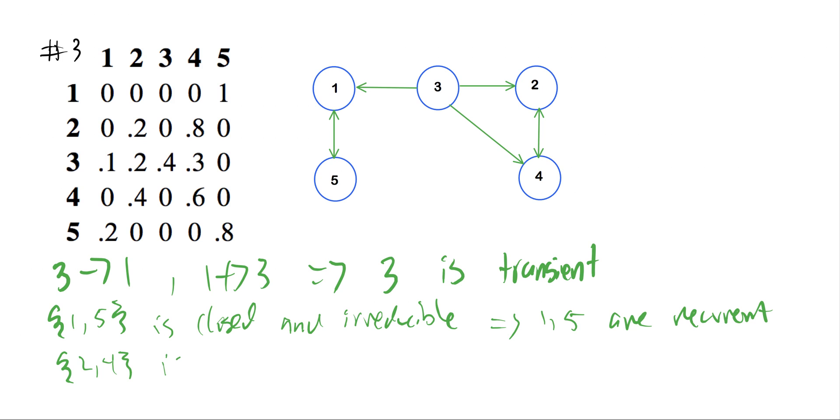So this is closed. And again, the definition of irreducibility: if i and j are in C, then i communicates with j. Well, 2 communicates with 4, and 4 happens to communicate with 2. So this set is also irreducible. And then exactly like the set 1 and 5, we have 2 and 4 are recurrent by that definition.